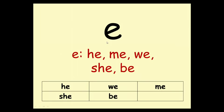E — he, me, we, she, be. Here are those words spelled out: he, we, me, she, be.